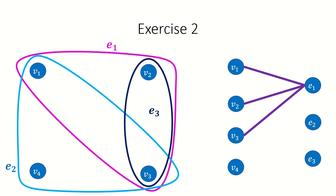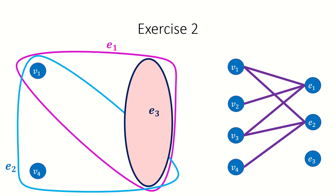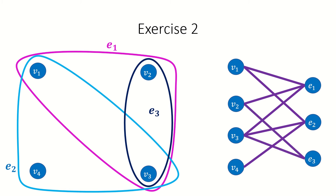In the hypergraph, edge e sub 2 is incident to vertices v sub 1, v sub 3, and v sub 4. So in the incidence graph, vertex e sub 2 is adjacent to vertices v sub 1, v sub 3, and v sub 4. Finally, in the hypergraph, edge e sub 3 is incident to vertices v sub 2 and v sub 3. So in the incidence graph, vertex e sub 3 is adjacent to vertices v sub 2 and v sub 3. This is our result.